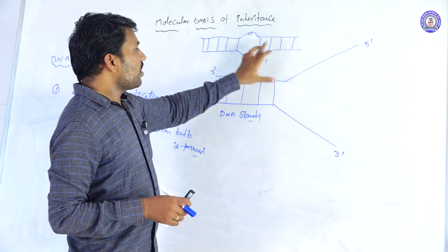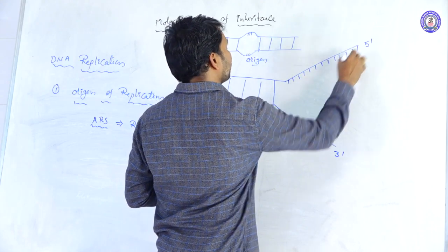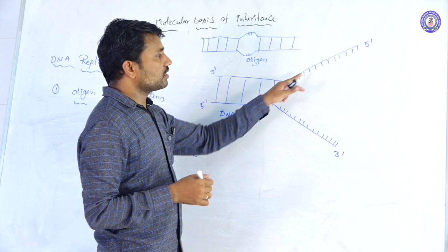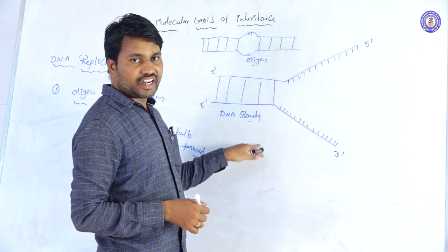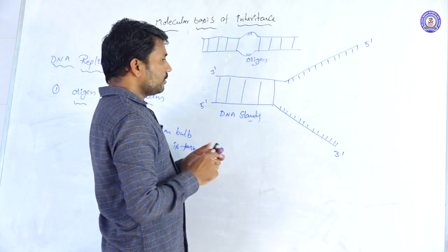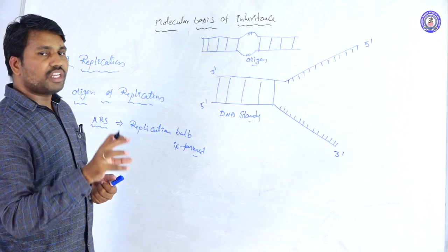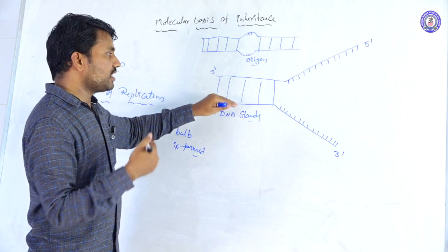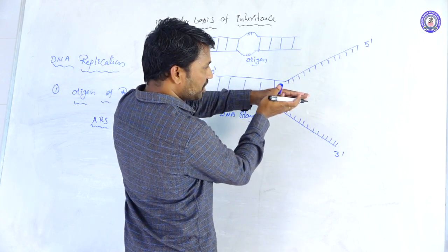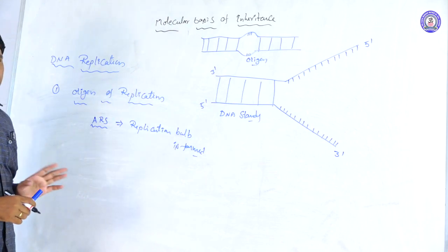As both strands separate from the helical structure through breakdown of hydrogen bonds, a bulbous structure forms. Specific enzymes and proteins are involved in this process and will be discussed in later steps. The separation of the two helical strands by hydrogen bond breakdown forming this bulbous structure is the first step — origin of replication.